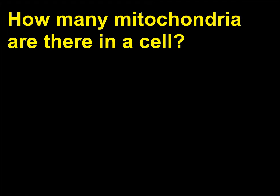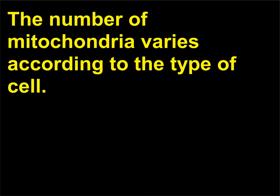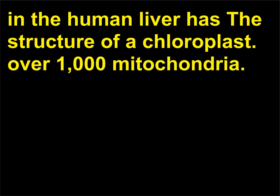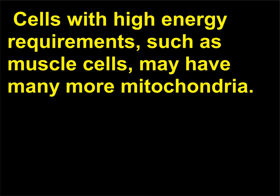How many mitochondria are there in a cell? The number ranges between 1 and 10,000, but averages about 200 per cell. The human liver cell has over 1,000 mitochondria. Cells with high energy requirements, such as muscle cells, may have many more mitochondria.